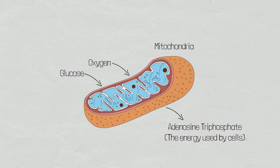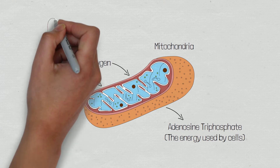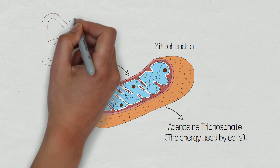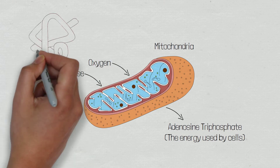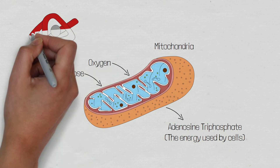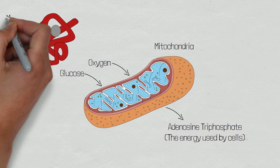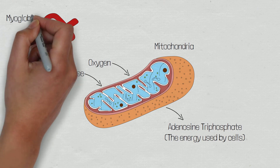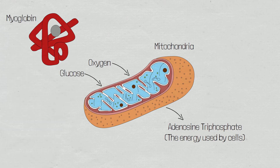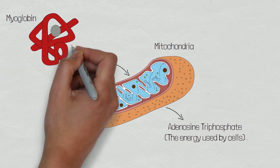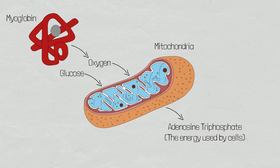Myoglobin is a red-coloured protein that binds oxygen molecules that diffuse into the cell. Myoglobin then releases them again when the mitochondria require oxygen for adenosine triphosphate production.